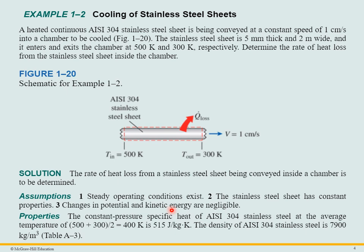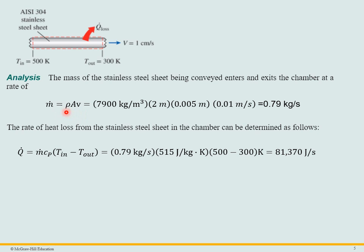So to find the mass flow rate, that's the density times the area times the velocity. So we have the density, the area. It's a rectangular sheet. Length times width times the velocity. So we can calculate the mass flow rate, the rate of heat loss. We can find that from the equation Q dot equals M dot C_P delta T. So we can plug that in and finally find the Q dot rate.